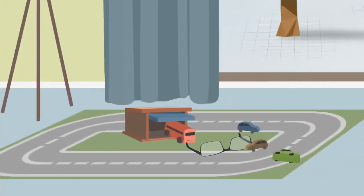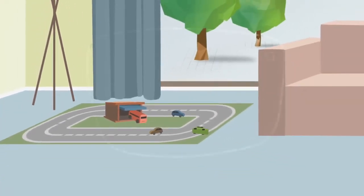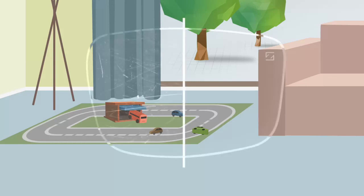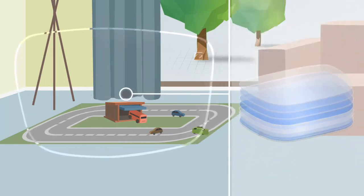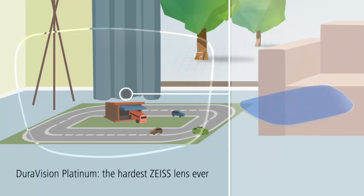Coated with Zeiss DuraVision Platinum, your lenses will survive even the toughest endurance tests and scratches will be a thing of the past. This superior hardness is thanks to 9 densely packed coating layers. DuraVision Platinum, the hardest Zeiss lens ever.